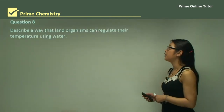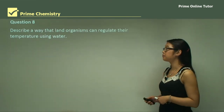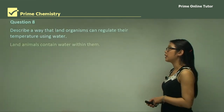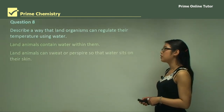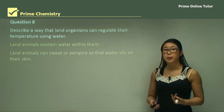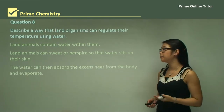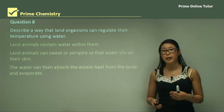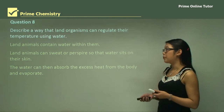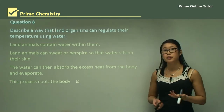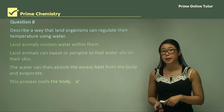Question 8: Describe a way that land organisms can regulate temperature using water. Land animals contain water within them. They can sweat or perspire so that water sits on their skin. The water then absorbs heat from the skin and evaporates. Evaporation removes the heat from the skin and therefore cools the body down.